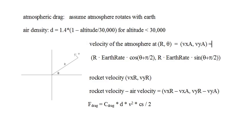We need to calculate the air's velocity at the rocket's location, which we suppose is at r, theta in polar coordinates. The air's velocity at r, theta is r times the Earth's rotation rate, and its direction is theta plus pi over 2. Resolving it into x and y components, the x component is r times Earth rate times cosine(theta plus pi over 2), and the y component is r times Earth rate times sine(theta plus pi over 2). Now we can compute the rocket's velocity minus the air's velocity, and compute the drag on the rocket using the usual formula: f-drag equals c-drag times density times v-squared times c-area divided by 2.